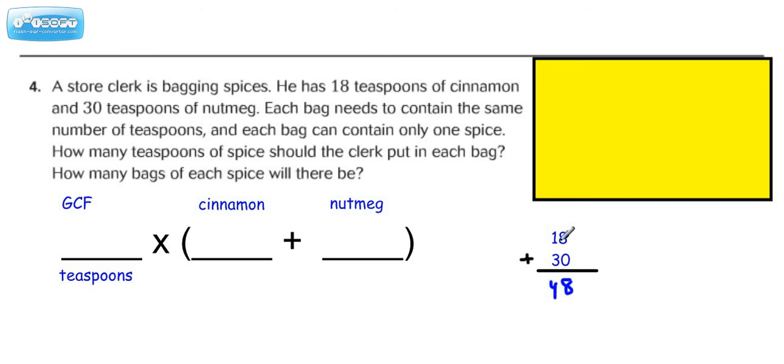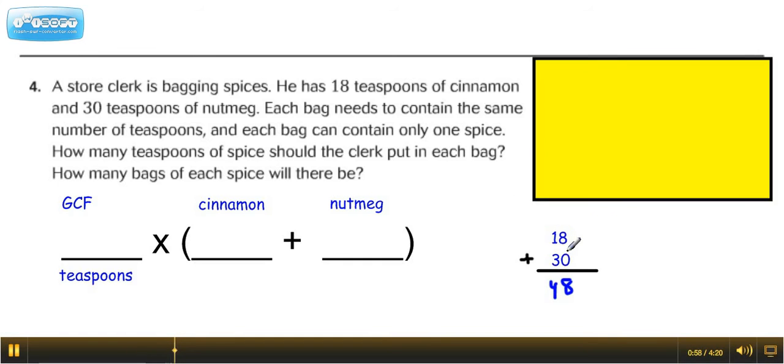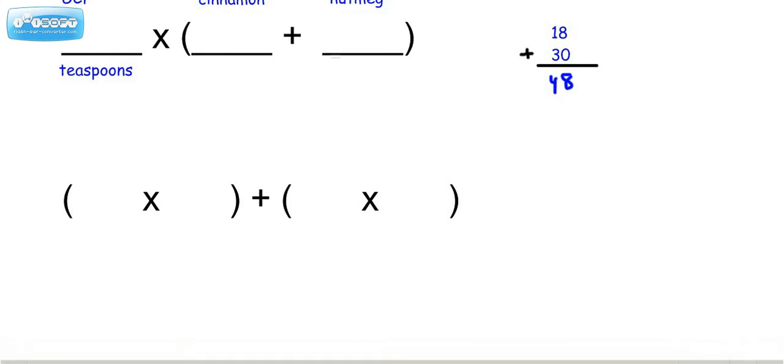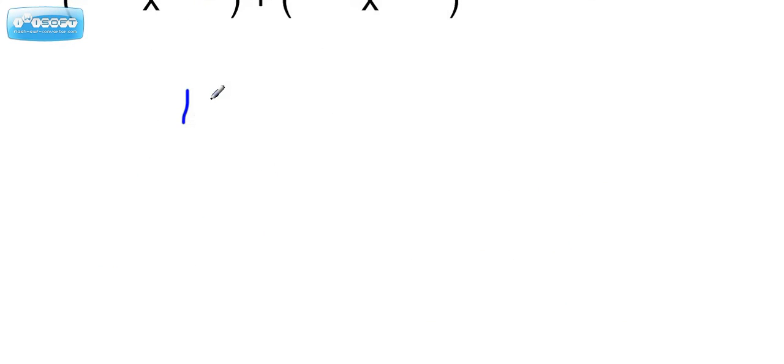Alright, now we need to find the GCF of both of these numbers, 18 and 30. So let's scroll down and do 18 over here and 30 over here. We'll use prime factorization for our technique to find the greatest common factor. Let's think of prime numbers that would give us 18. The lowest prime number would be 2, so it would be 2 times 9.